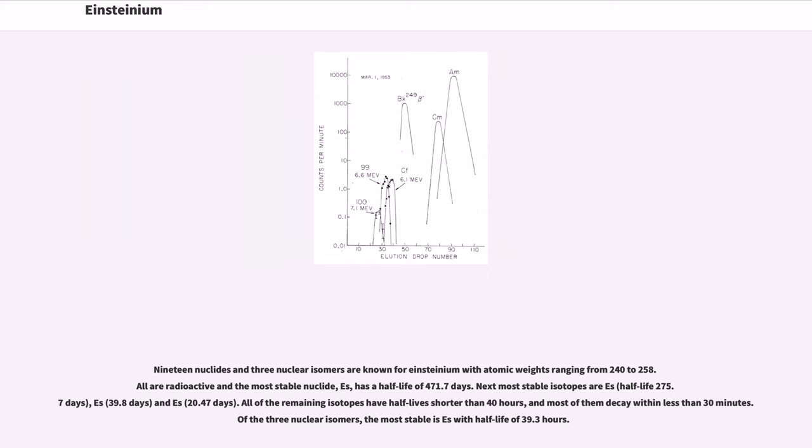19 nuclides and three nuclear isomers are known for Einsteinium with atomic weights ranging from 240 to 258. All are radioactive and the most stable nuclide, Es-252, has a half-life of 471.7 days. Next most stable isotopes are Es-254, half-life 275.7 days, Es-255, 39.8 days, and Es-253, 20.47 days. All of the remaining isotopes have half-lives shorter than 40 hours, and most of them decay within less than 30 minutes. Of the three nuclear isomers, the most stable is Es-254m with half-life of 39.3 hours.